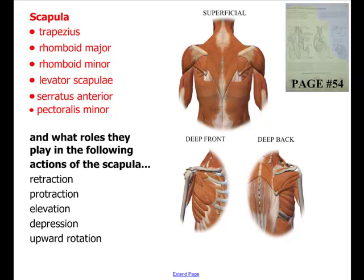Looking at this area, there are six muscles we're going to focus on: the trapezius, the rhomboid major, rhomboid minor, levator scapula, serratus anterior, and the pectoralis minor. Those muscles are responsible for a number of actions related to scapular stabilization: retraction, protraction, elevation, depression, and upward rotation.